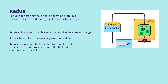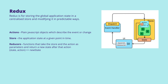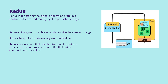The store is the application state at any given point in time. Actions are just plain JavaScript objects which describe the event or change — i.e., the user is adding 10 to an account. Reducers are functions that take the state and the action as parameters and return a new state after that action. So in summary, the action triggers the reducers to modify the store, and only reducers can change the store.